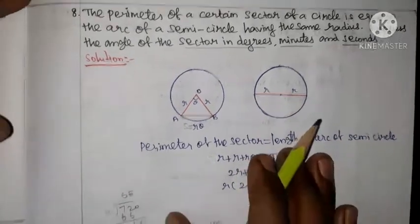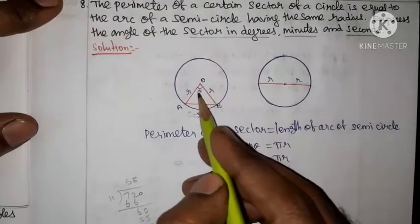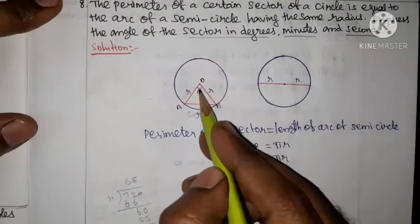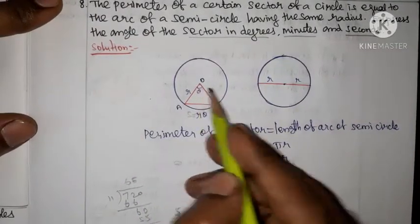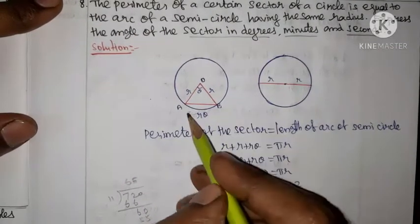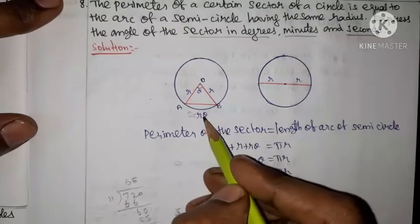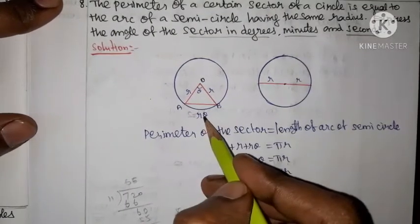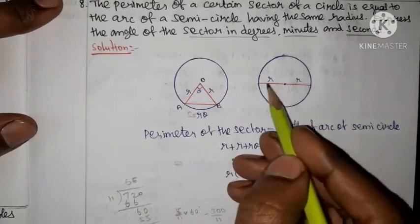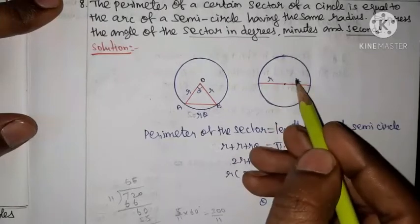Solution. Let the radius be R, the angle be theta, and the arc length S. S is given by r times theta. So the diameter of the circle is twice the radius.